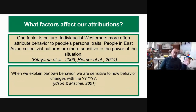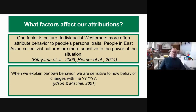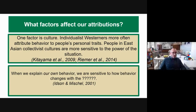Culture also affects our attributions. In our highly individualistic western society, we are more likely to attribute behavior to someone's internal personal traits. People in Eastern Asian collectivist cultures that are more about the group are much more sensitive to the power of the situation. To sum up: when we explain our own behavior, we are sensitive to how our behavior changes with the situation - that's the actor-observer effect. When we explain someone else's behavior, we are more concerned about their internal traits - that's the fundamental attribution error.